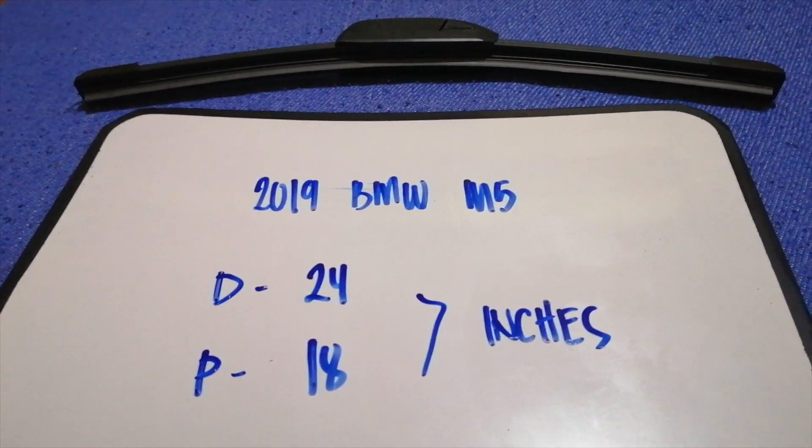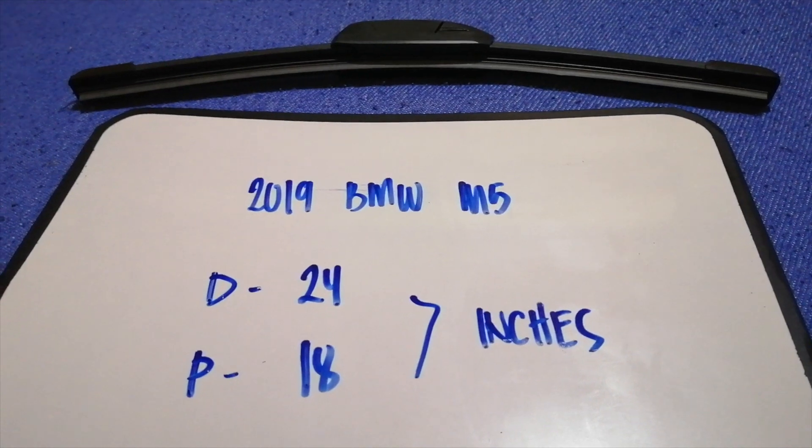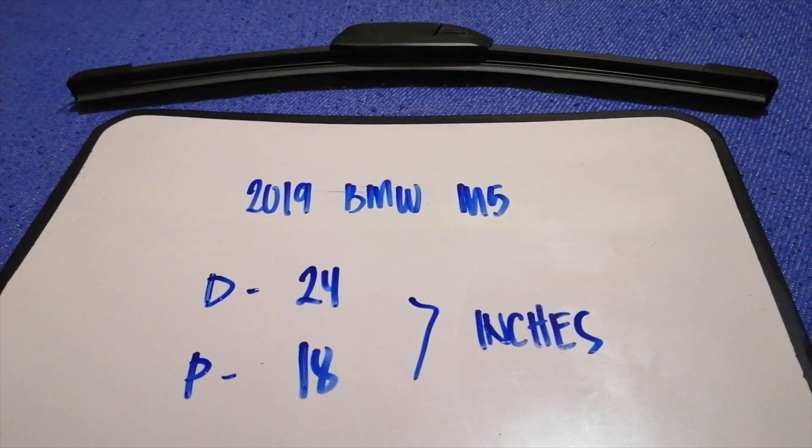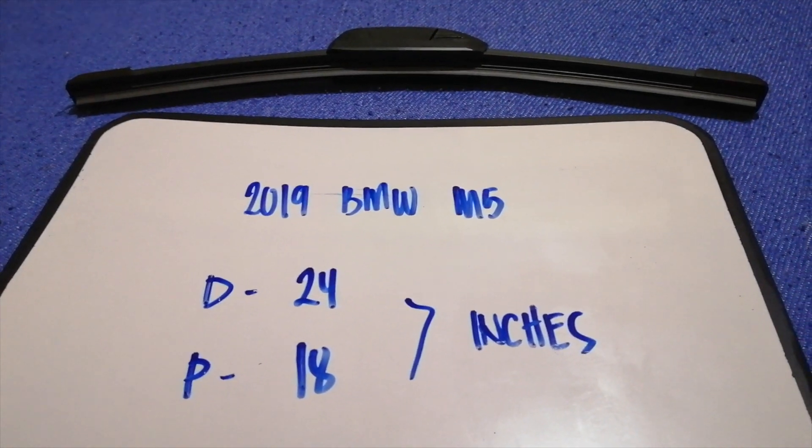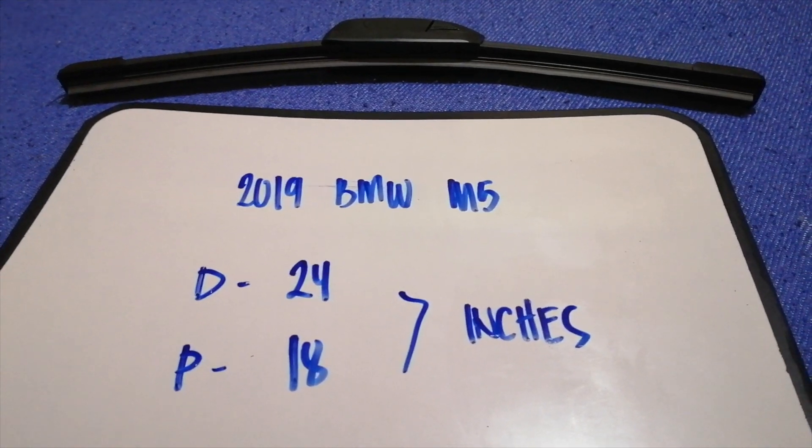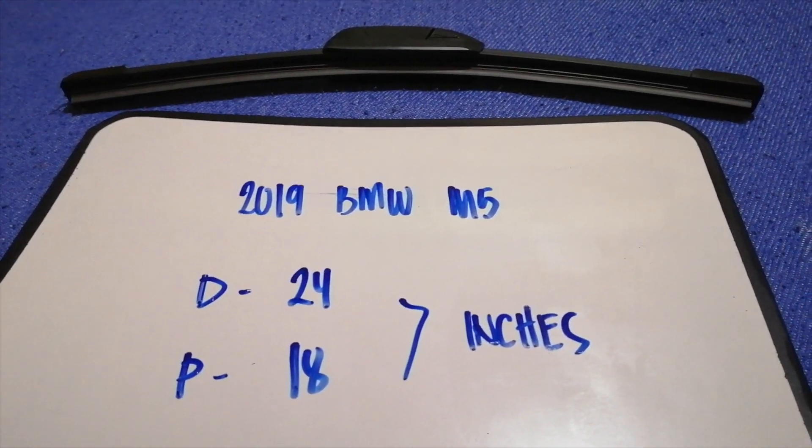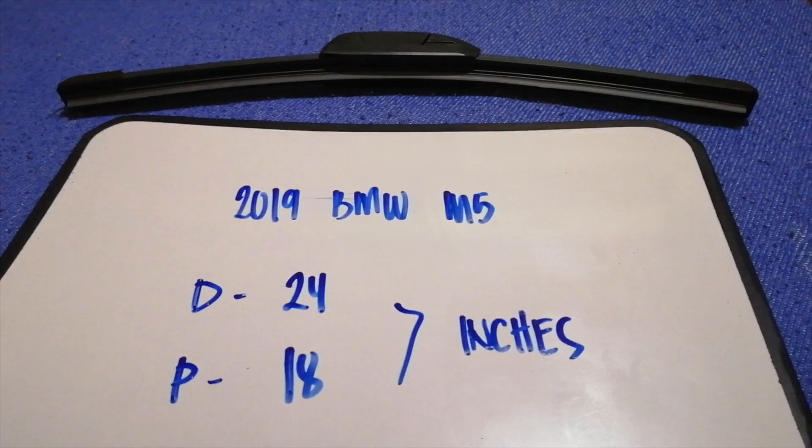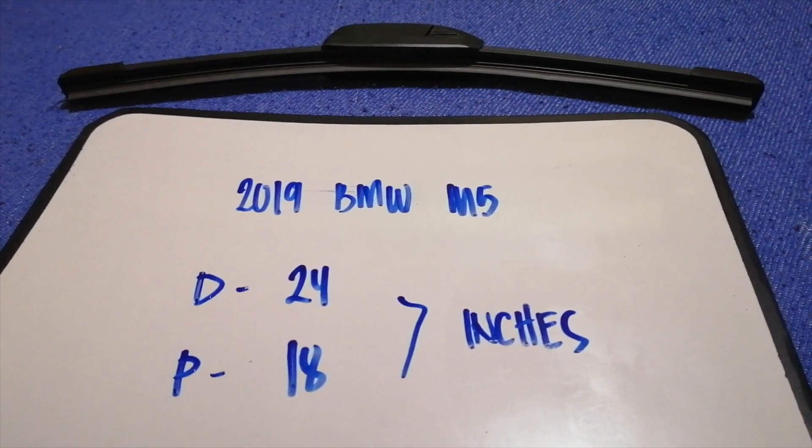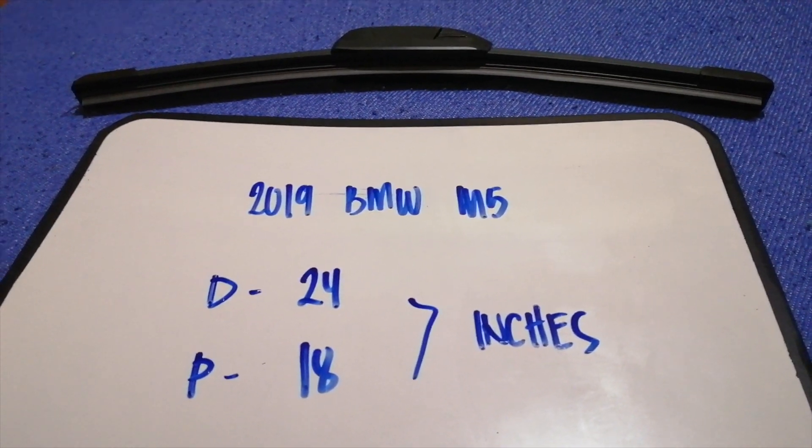So once again, the wiper blade replacement size for the 2019 BMW M5 is 24 inches for the driver and 18 inches for the passenger. And if your 2019 BMW M5 uses a different size or if you know a cheaper place to buy a wiper blade replacement for the 2019 BMW M5, be sure to leave a comment and let the rest of us know.